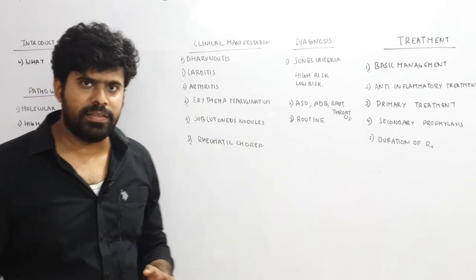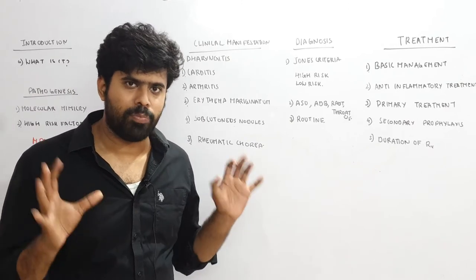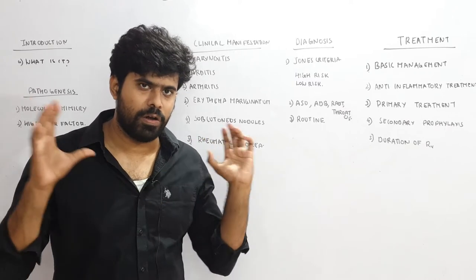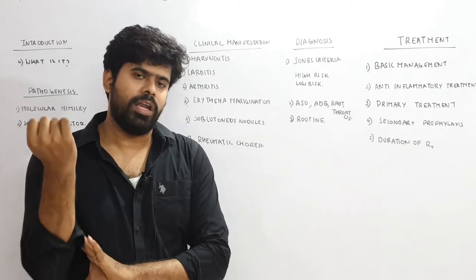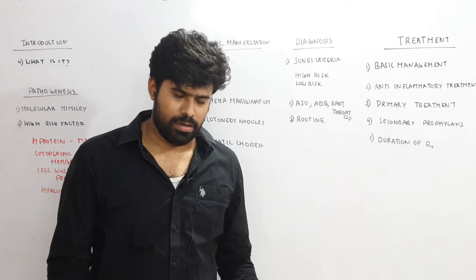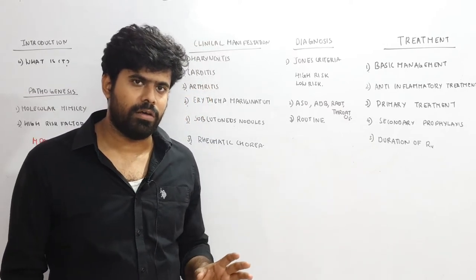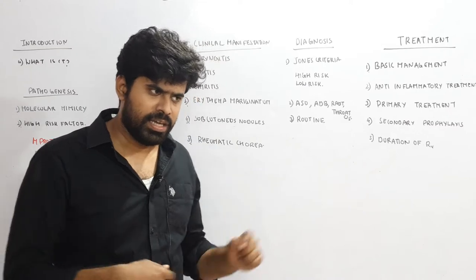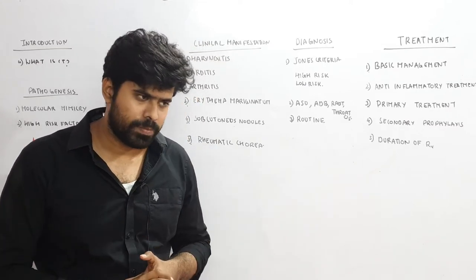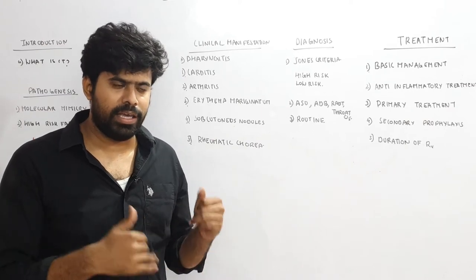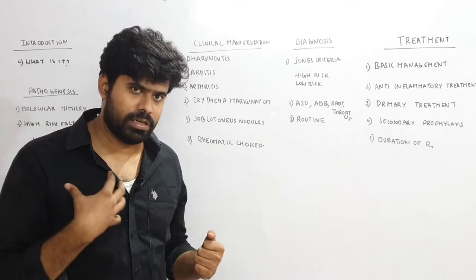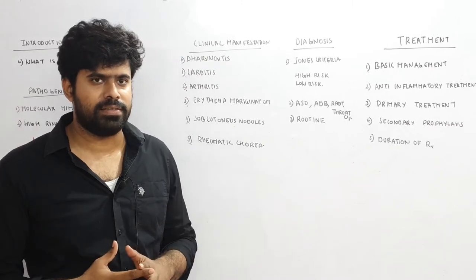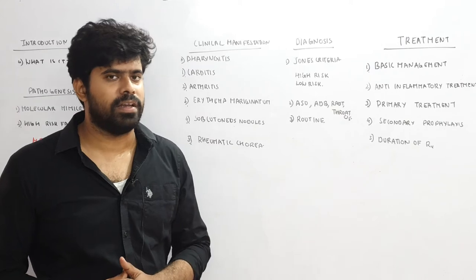Arthritis in rheumatic fever is unique — it is a migratory polyarthritis involving the larger joints such as the knee joint, ankle joint, elbow joints, and wrist joint. Small joints are not involved. One day there will be knee joint involvement, the next day ankle involvement, progressing migratorily. There will be very severe pain, swelling, redness, and tenderness, and synovial fluid examination will show a high WBC count. This arthritis usually heals without any sequelae, except in Jaccoud's condition, and shows very good response to aspirin.